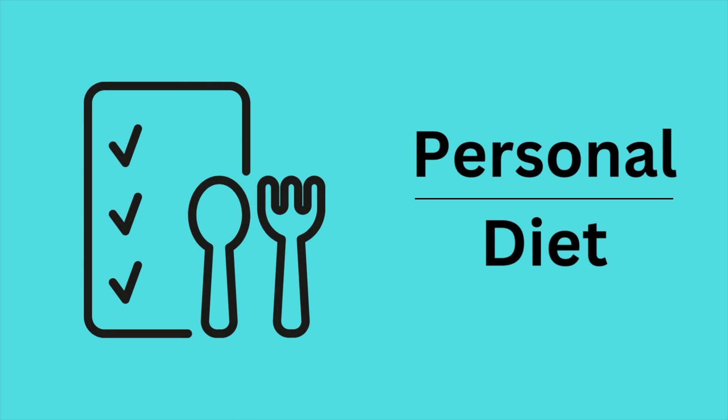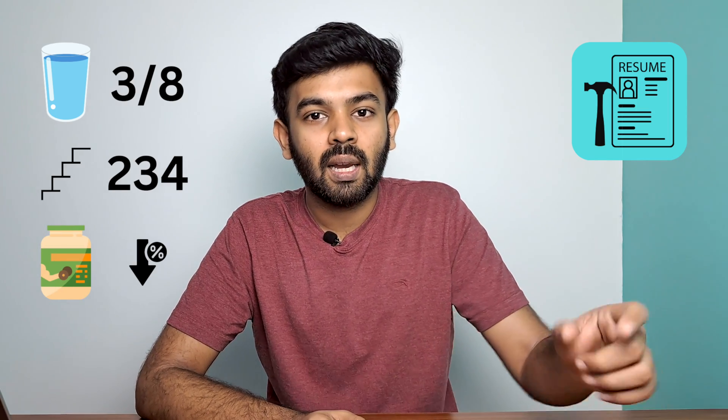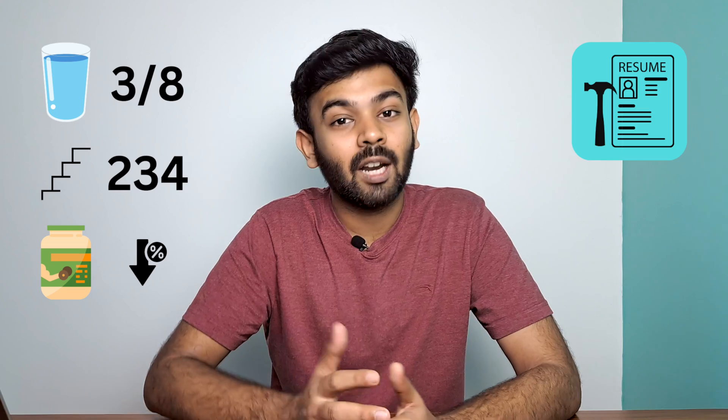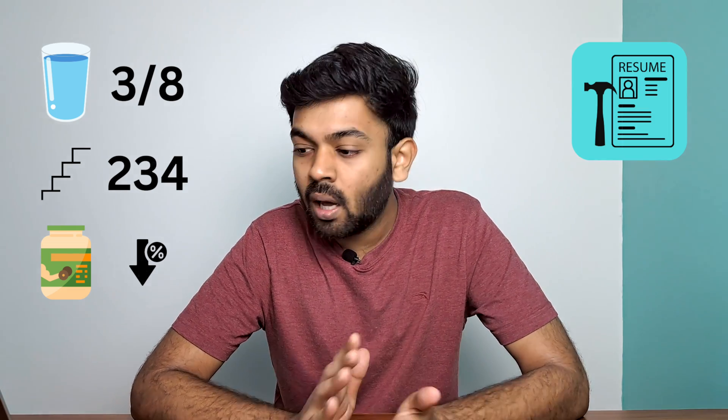The next idea is a personal dieting app where you monitor your calorie intake. If it's complicated, you can start simple — track water intake. You can also add dietary recommendations. For a more advanced version, you can use computer vision: take a photo of your food and the app suggests how many calories are in it using AI integration.